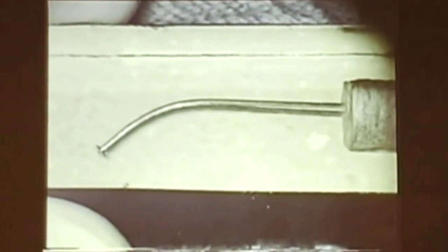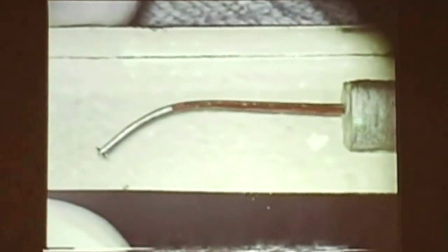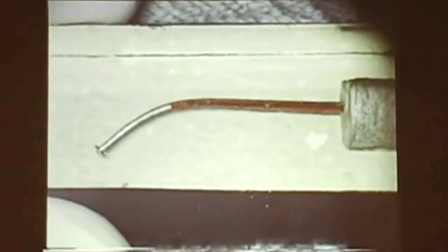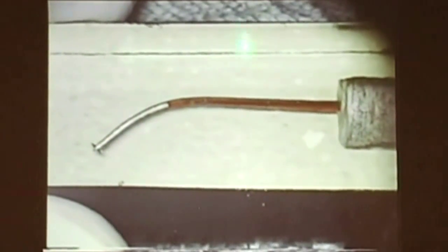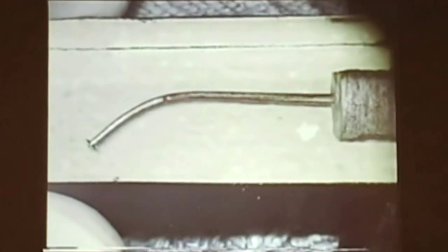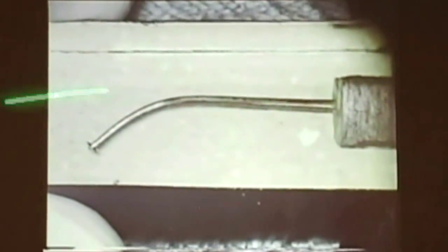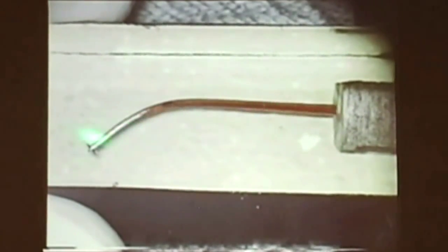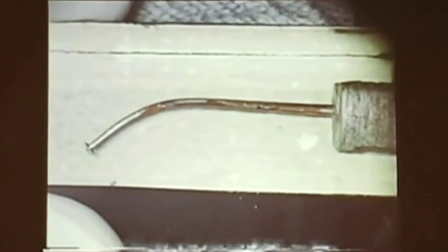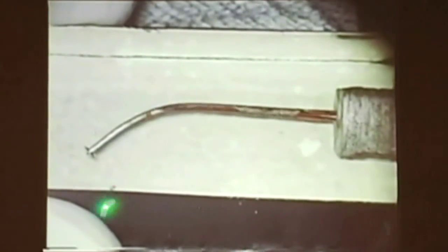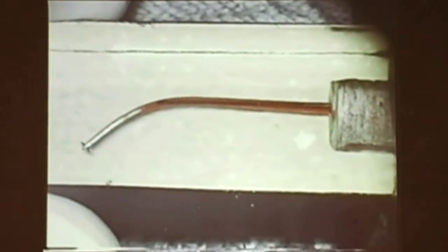Everybody who does endo deals with this — it's called vapor lock. You inject your fluid, whether it be EDTA or water, and you get this vapor lock because as the canal gets smaller and smaller, the fluid can't get there. And of course, if you don't go in and clean this out, this is the part that remains always contaminated. This is the part that fails usually.